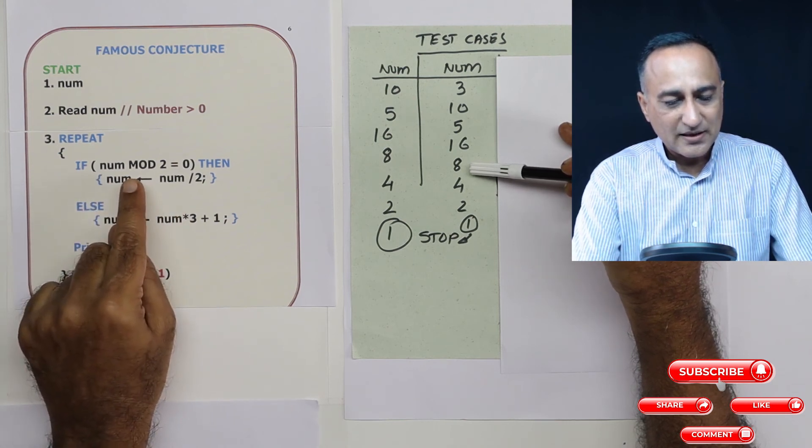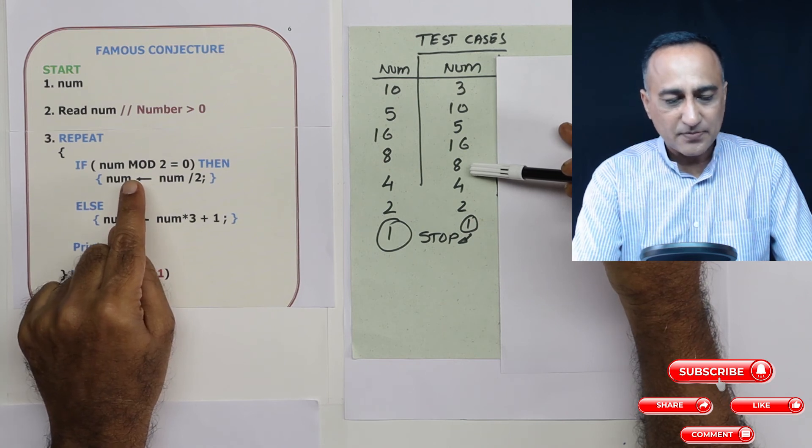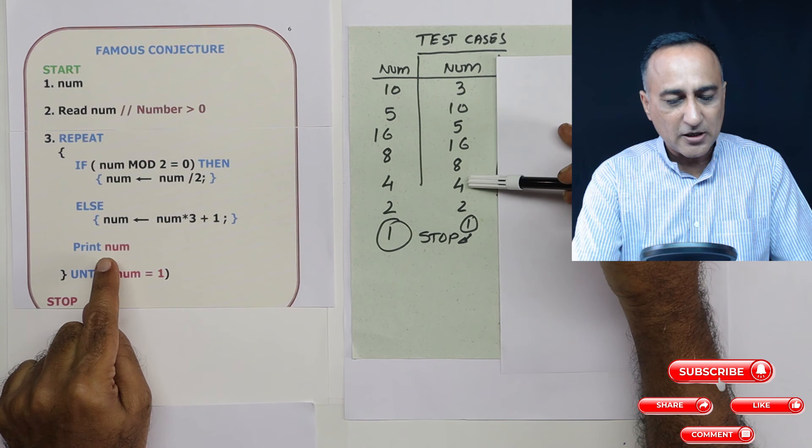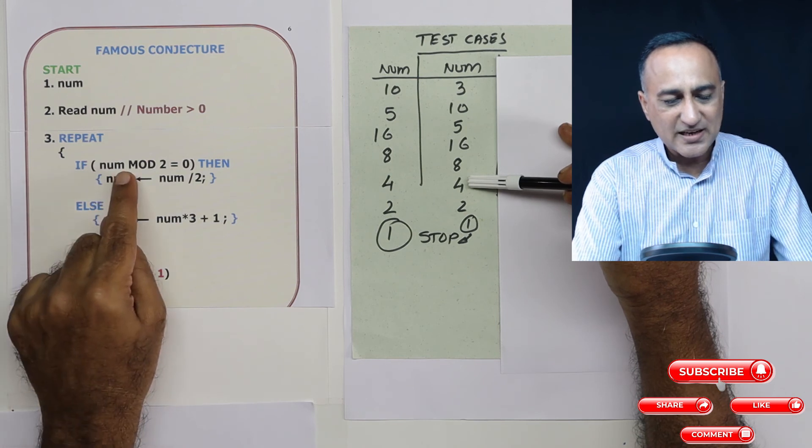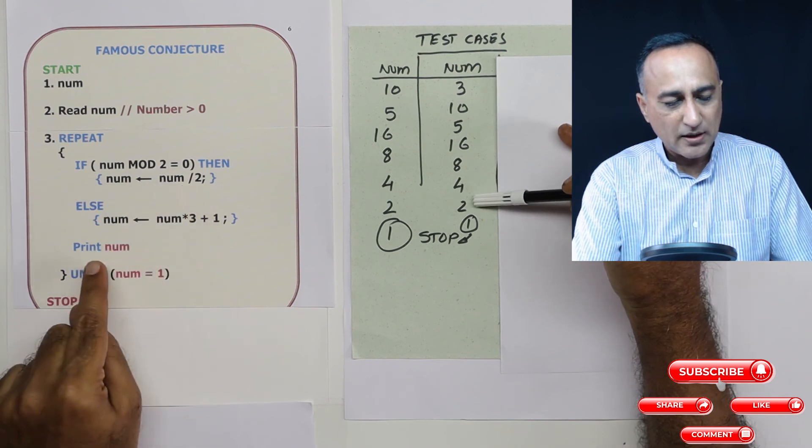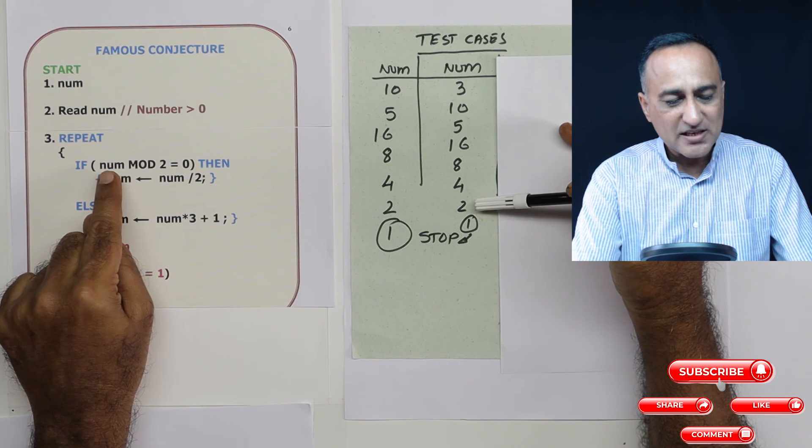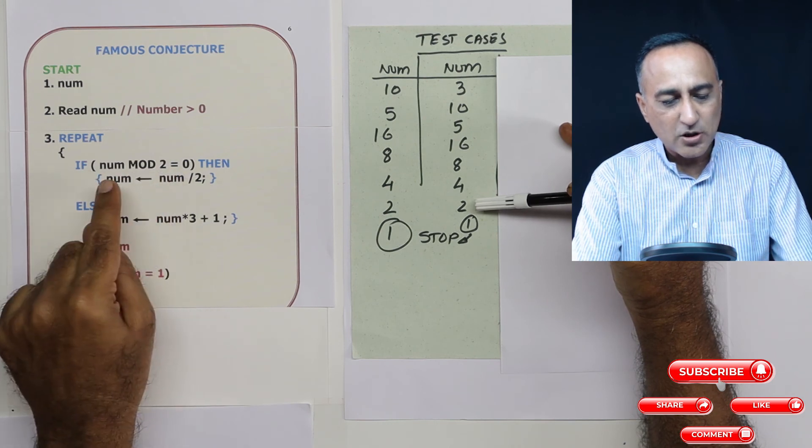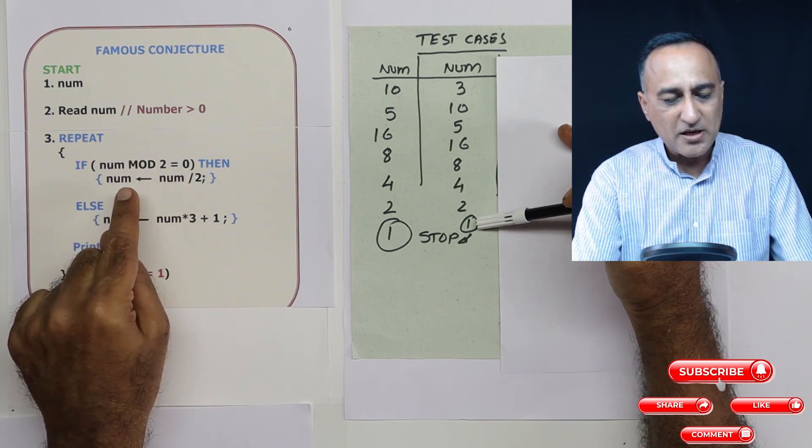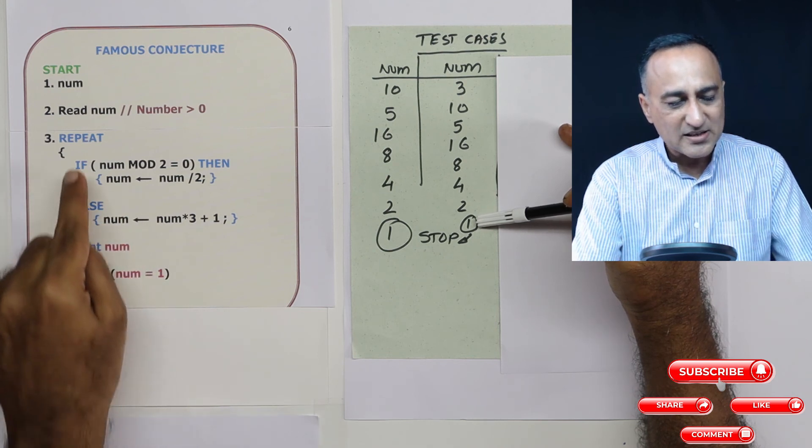Then I go back here. 8 mod 2 is 0 because 8 is an even number. Then I am going to come here and print 4. 4 is again an even number, so I am going to divide 4 by 2, it's going to become 2. I am going to print 2. I am going to go back here. 2 is an even number. 2 mod 2 is 0. 2 divided by 2 happens to be 1. I am going to print 1. This condition is going to be true and this loop will fail.